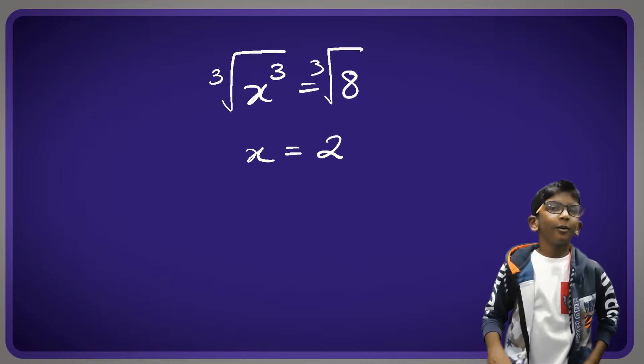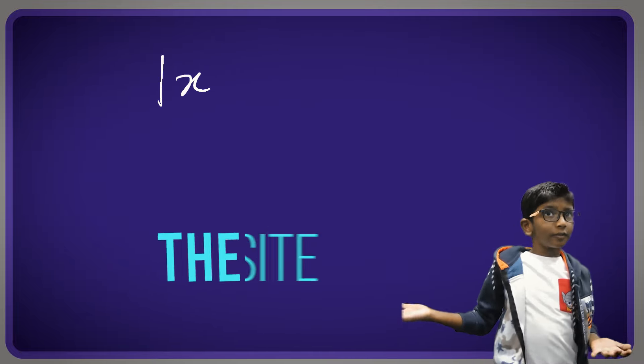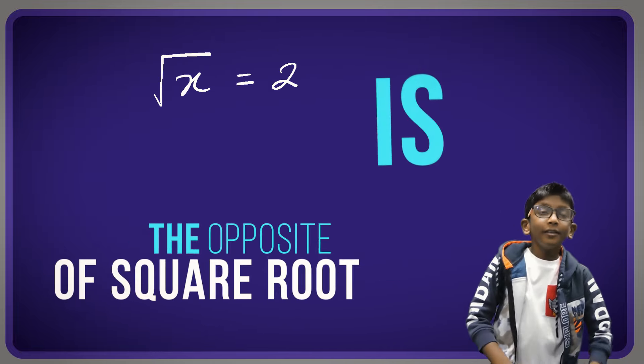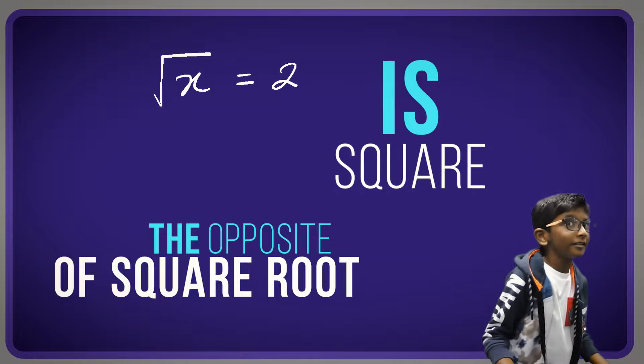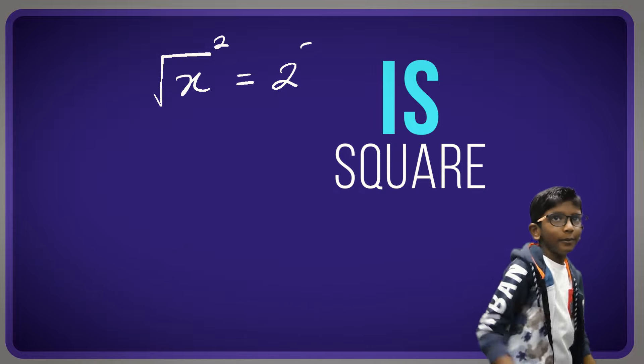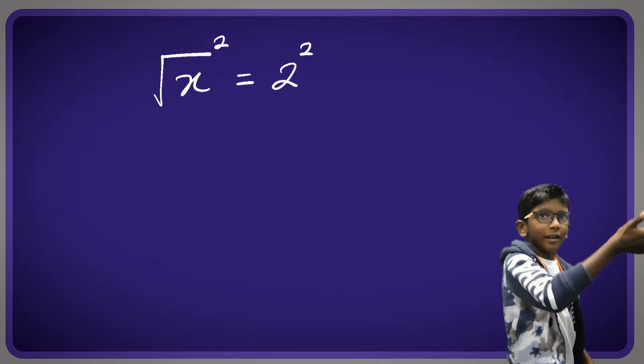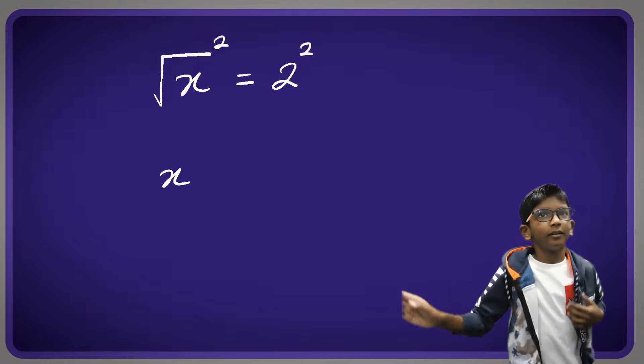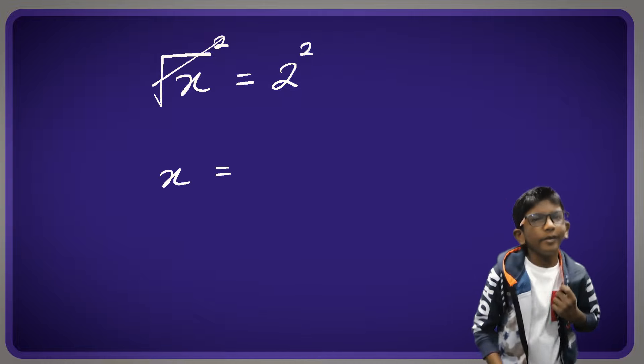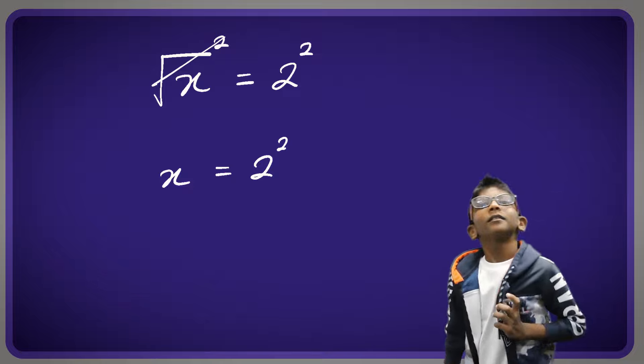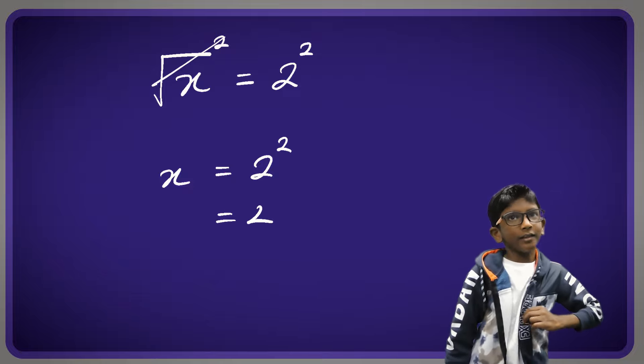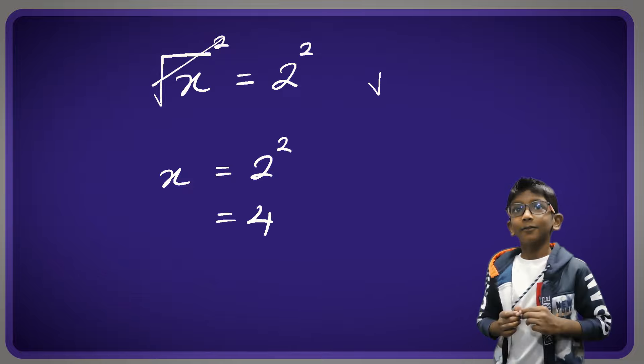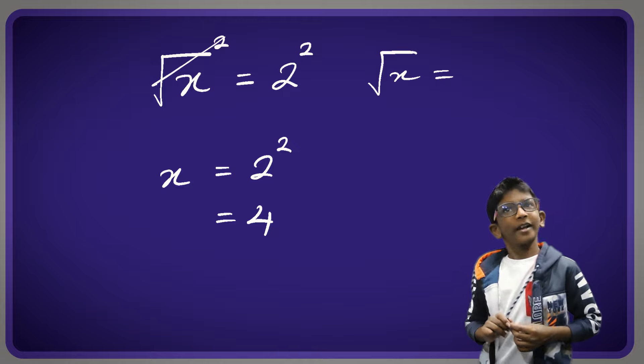So now we are doing the opposite of that. Now the square root of x equals 2. Now what is the opposite of a square root? It's a square. So we put a square on both sides, cancel, and then simplify on the other side. And then we get x equals 4. The root never goes and becomes a square, so we only add the square to both sides.